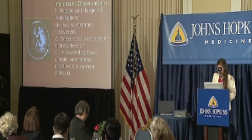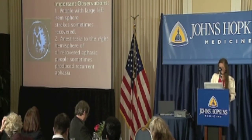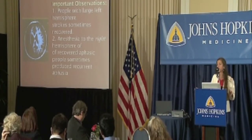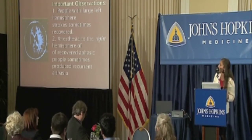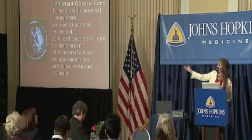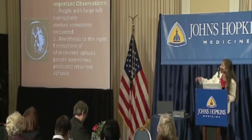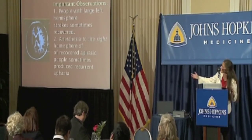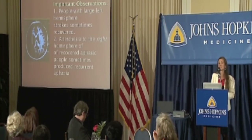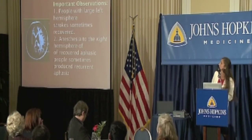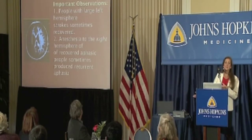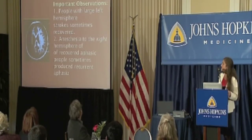People in the 1800s and 1900s made important observations. They noticed that people who had very large strokes — large areas of damage to the left hemisphere — had sometimes completely recovered language. This is a brain scan of a person who had a huge stroke in the left hemisphere, suggesting the right hemisphere took over language. Even more importantly, if you anesthetize the right hemisphere of someone like this who had recovered language, they became aphasic again, confirming that language had crossed over to the right hemisphere.